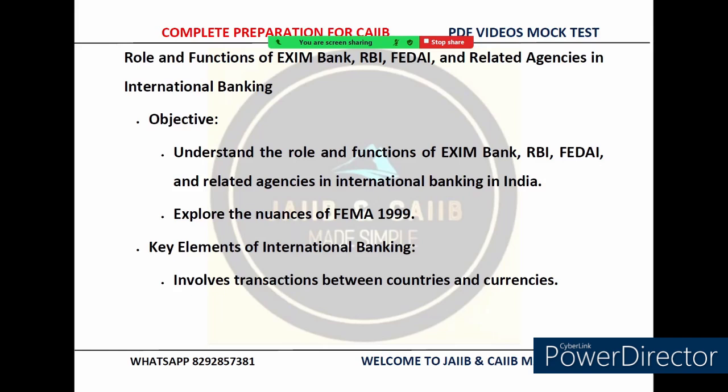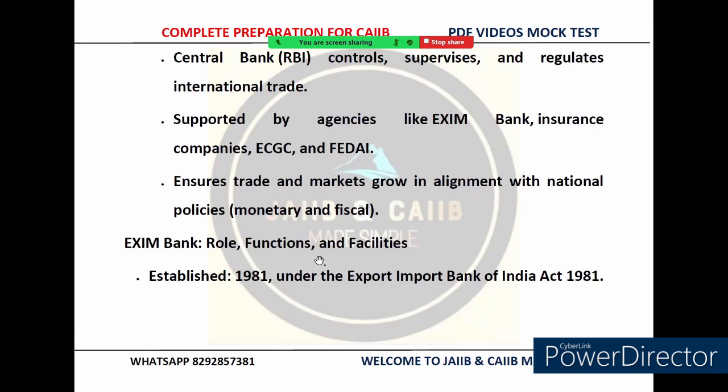For example, if you are sending money abroad or a company is making international payments, FEDAI ensures that everything is done according to the guidelines. So to summarize: international banking involves transactions between different countries and currencies; RBI controls and regulates international banking under FEMA 1999; EXIM Bank, established in 1981, provides long-term loans to support exports and imports; and FEDAI sets guidelines for foreign exchange transactions.